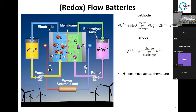The key elements of a flow battery are the tanks with electrolytes. Vanadium is normally used because it has different oxidation states. The electrochemical reaction involves reduction and oxidation: on the anode, oxidation takes place upon discharge, electrons are released to the external load, and protons must go through the membrane to reach the cathode, where reduction completes the full cycle.